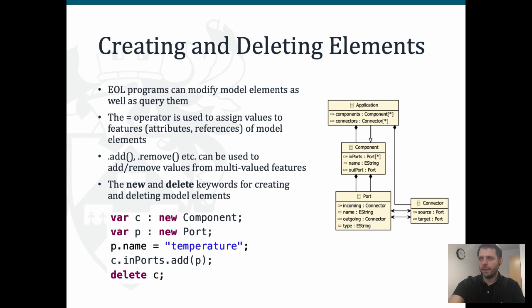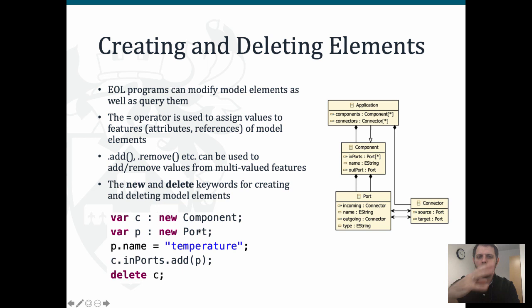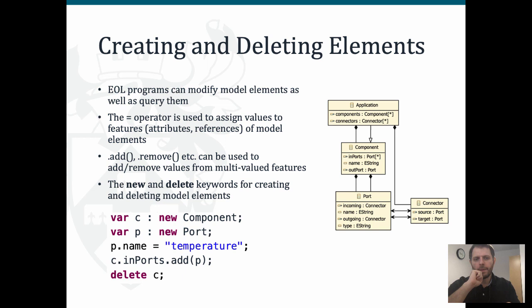Eventually we delete our component. When we create a component or a port, unless we place them somewhere in the structure of our model - say under an application - they appear as top-level elements floating at the top of our model. When we call c.inPorts.add(p), then p goes under the component because inPorts and outPorts are containment references. For the same reason, when we delete c, the new port is deleted as well because it lives under a containment reference of c. This is the semantics of containment that we discussed yesterday.